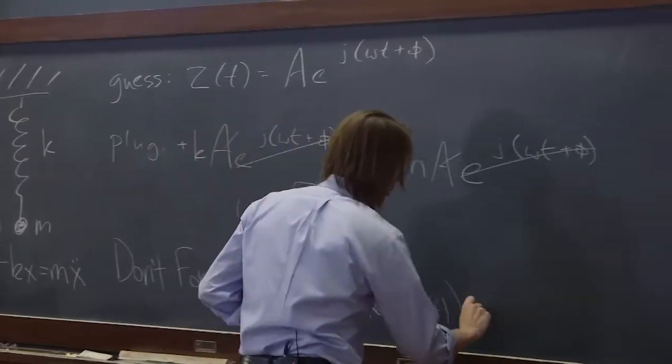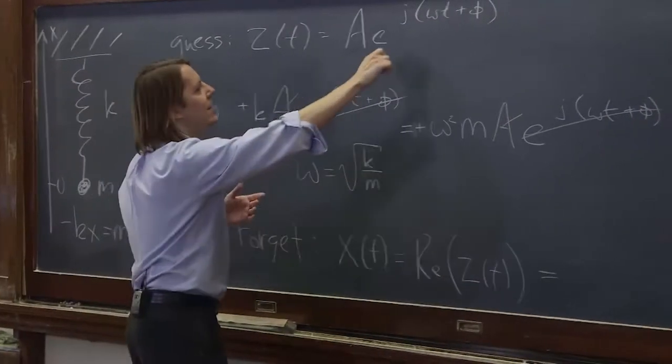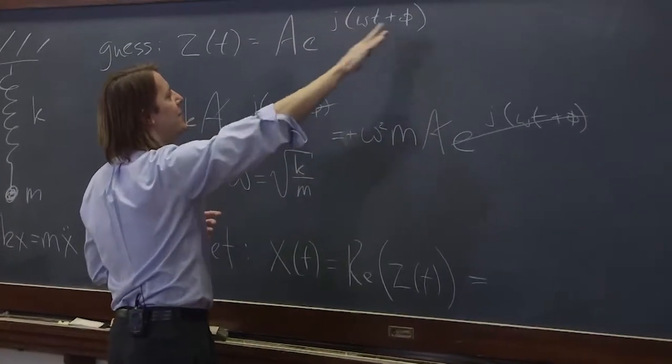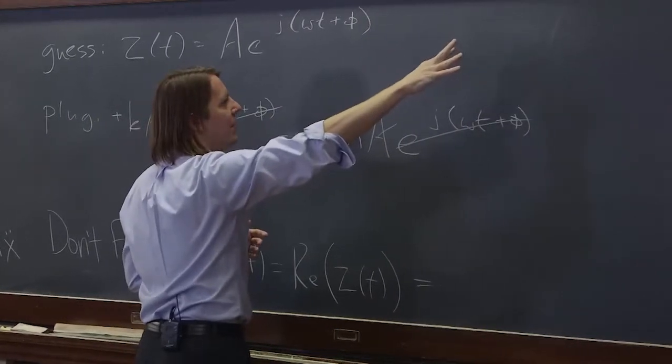What is the real part? Well, remember, e to the something, this is ae to the j something. Remember, this is a cosine omega t plus phi plus j sine omega t plus phi.